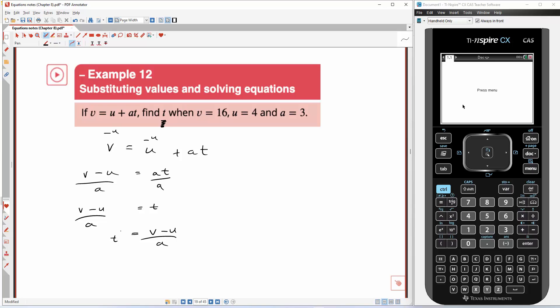Okay, now what we're going to do is what's called evaluating t, because they've told us that v is 16, u is 4, and a is 3. So we're going to go t equals v is 16, u is 4, and a is 3. So 16 take away 4 is 12 on 3, and 12 on 3 is 4. So all we did there was solve for t, or make t the subject, and then substitute these values in.